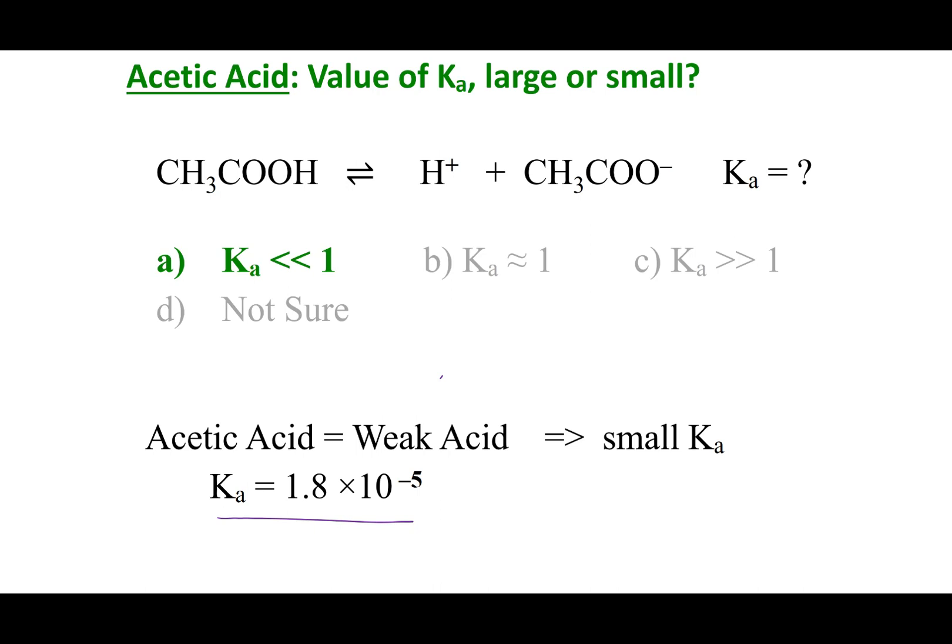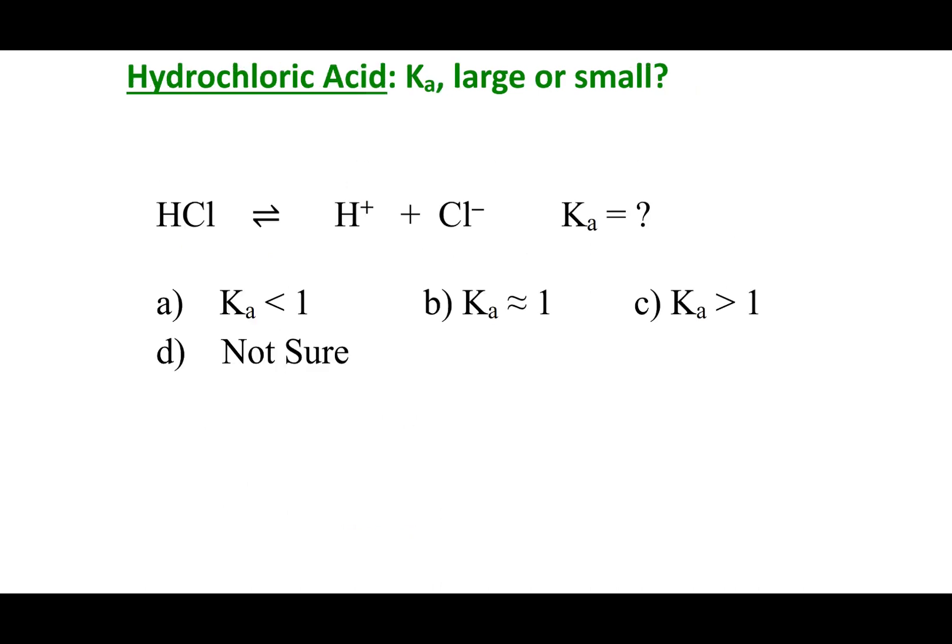So, the take-home message here is if you have a weak acid, it has a small Ka. So, let's go ahead and think about HCl. Tell me if this thing is going to have a large or small Ka.